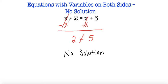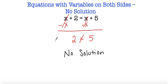Even if I substituted 0: 0 plus 2 is 2, and 0 plus 5 is 5. So there's no number that I could substitute for x that would make these two expressions equivalent to each other, and so we have no solution. There's no possible x value that would work in this case.